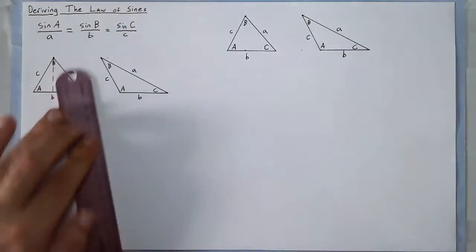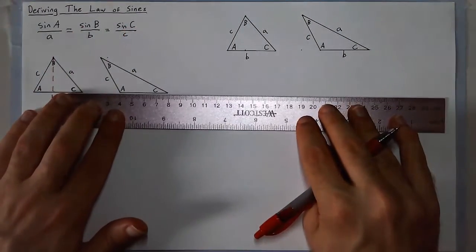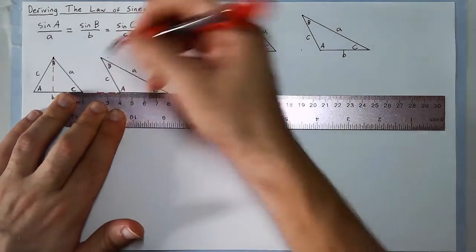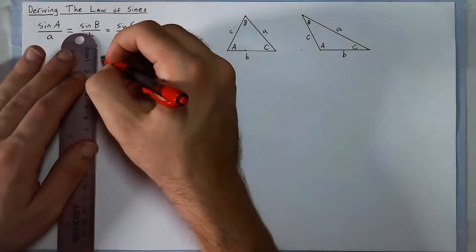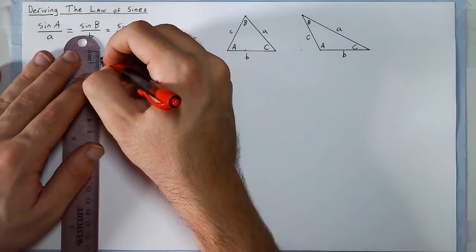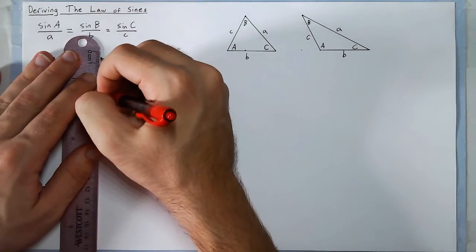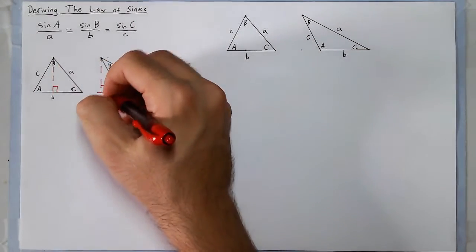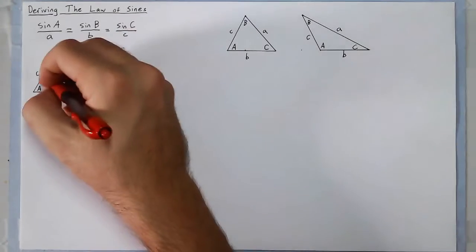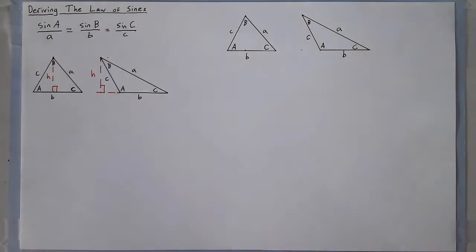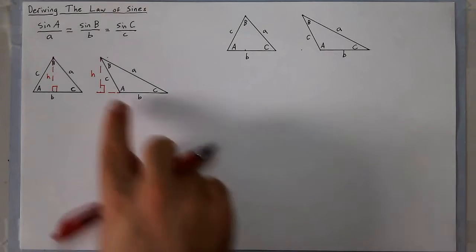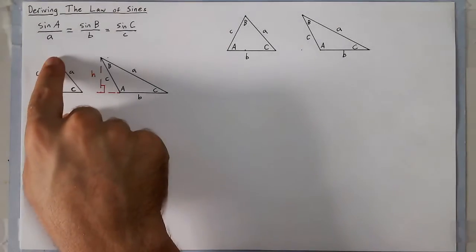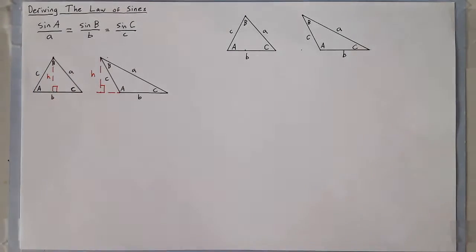So these are two different situations. The way you draw the height for the obtuse angle triangle is to extend one of your sides to the vertex that sticks out, and then drop your height. So the height for both of these would be as such — I'll call these H — and they are perpendicular to a horizontal line. I'm going to take the height from vertex B for both triangles.